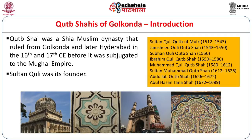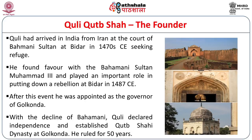Sultan Kuli was the founder. There were eight kings: Sultan Kuli Qutub ul-Mulk, Jamshid Kuli Qutub Shah, Subhan Kuli Qutub Shah, Ibrahim Kuli Qutub Shah, Muhammad Kuli Qutub Shah, Sultan Muhammad Qutub Shah, Abdullah Qutub Shah, and Abul Hasan Tanasha. These were the eight kings who ruled from Golconda between the 16th and 17th centuries.